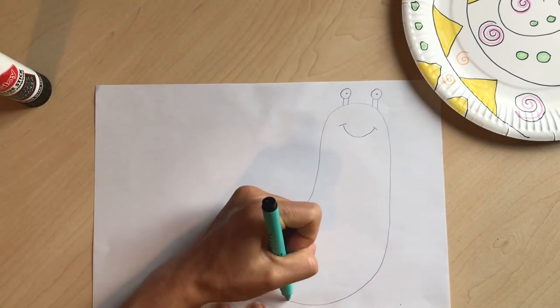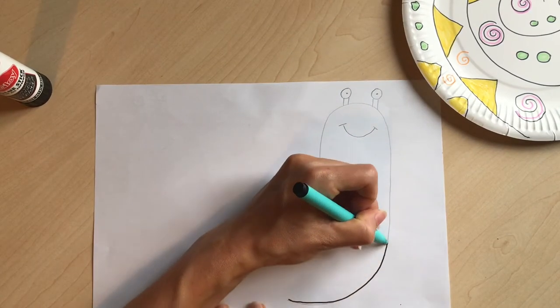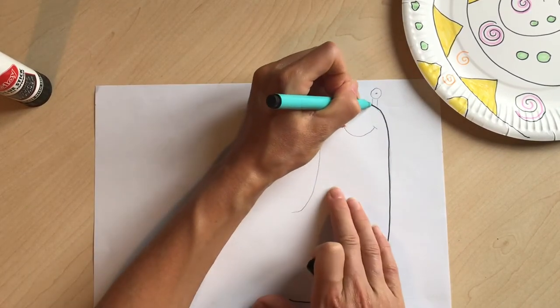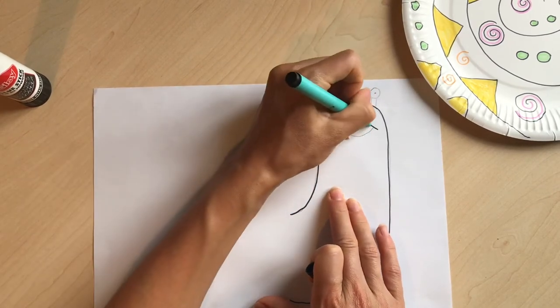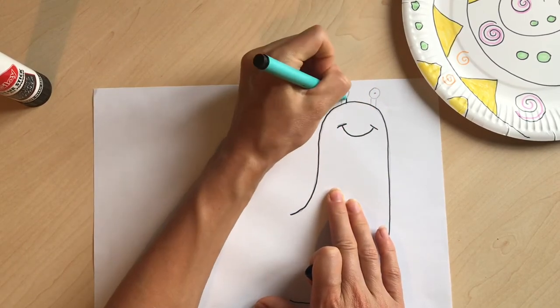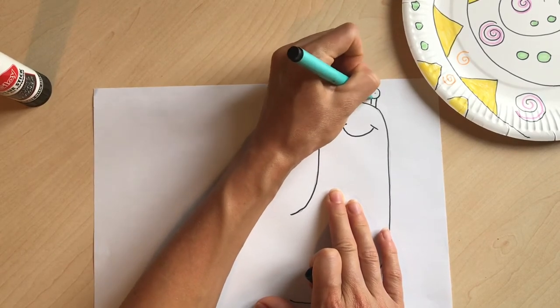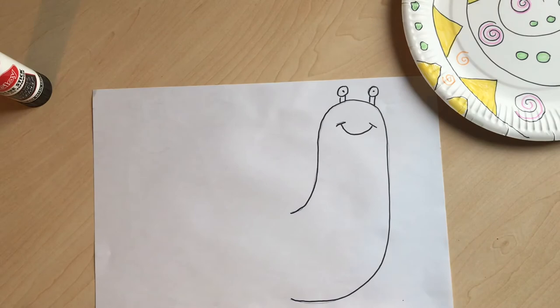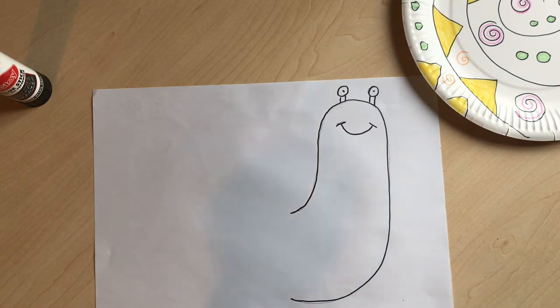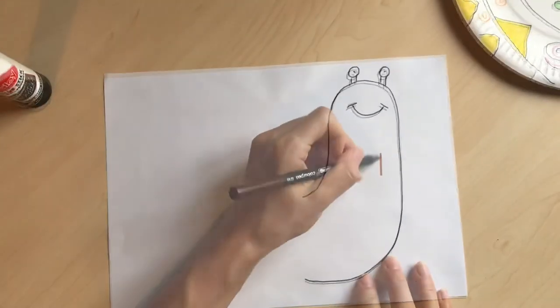Then you just need to go around that with a black pen if you want to and then you're going to color it in a brownie color and I'm going to cut it out. And then I'll show you what we're going to do next. Stay tuned in.